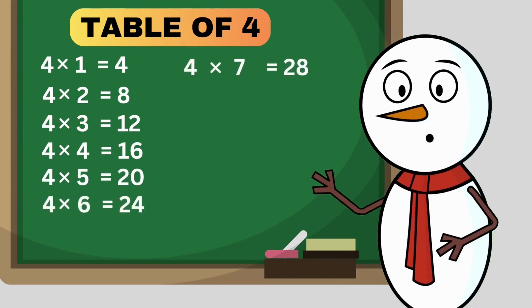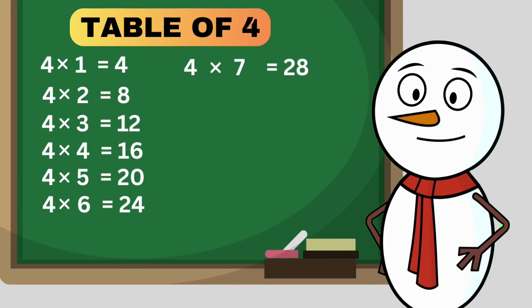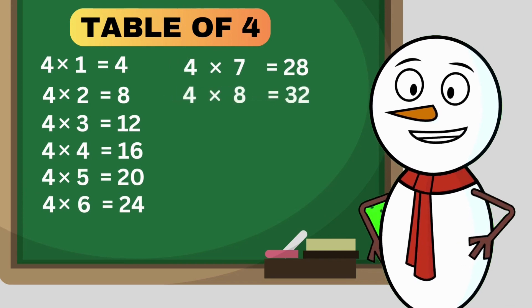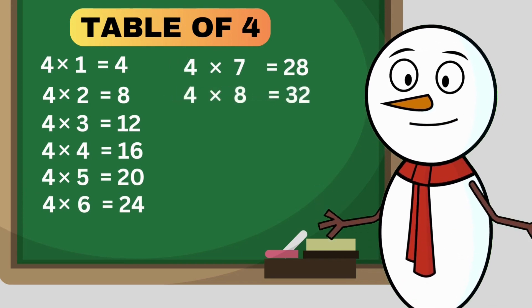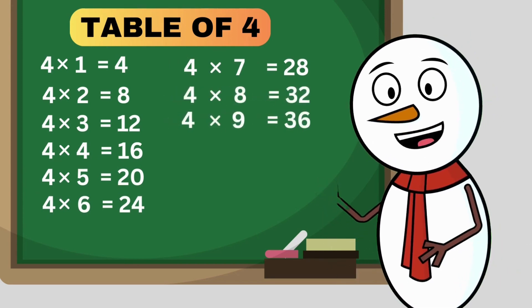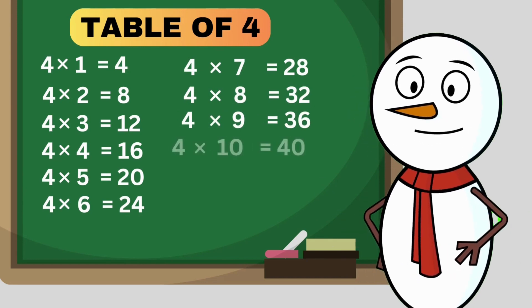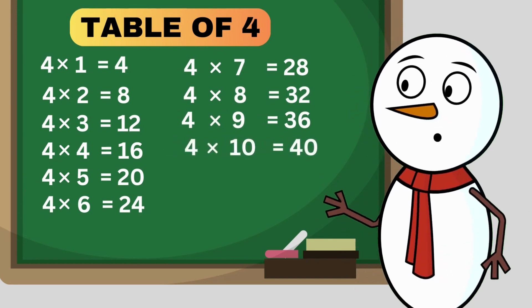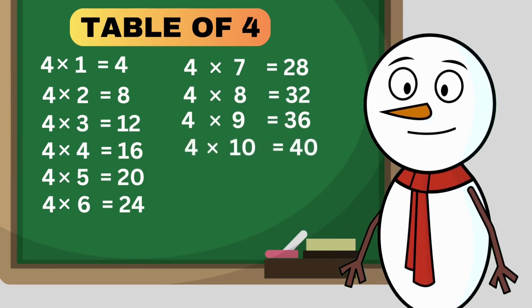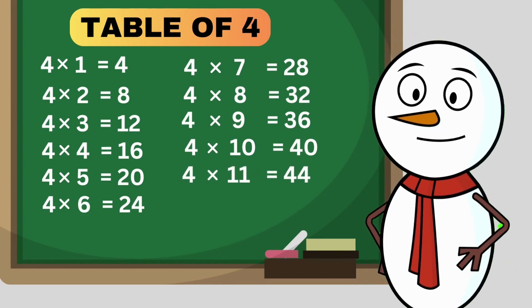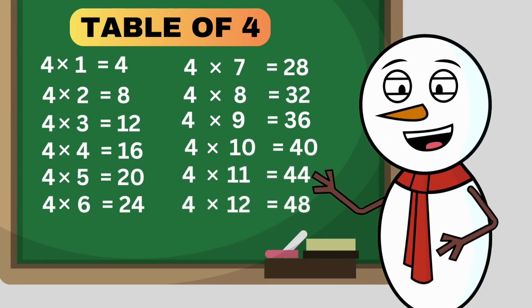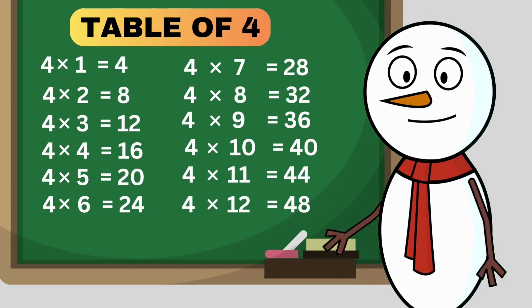4 times 7 is 28. 4 times 8 is 32. 4 times 9 is 36. 4 times 10 is 40. 4 times 11 is 44. 4 times 12 is 48.